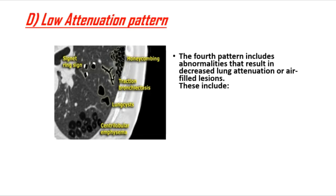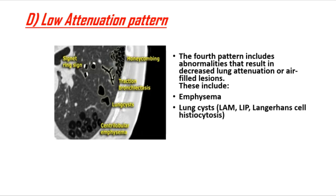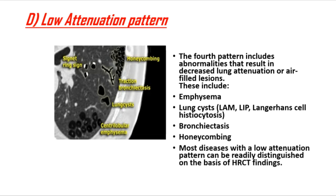The fourth pattern includes abnormalities resulting in decreased lung attenuation or air-filled lesions. These include emphysema, lung cysts, LAM, Langerhans cell histiocytosis, bronchiectasis, and honeycombing. Most diseases with a low attenuation pattern can be readily distinguished on the basis of HRCT findings.